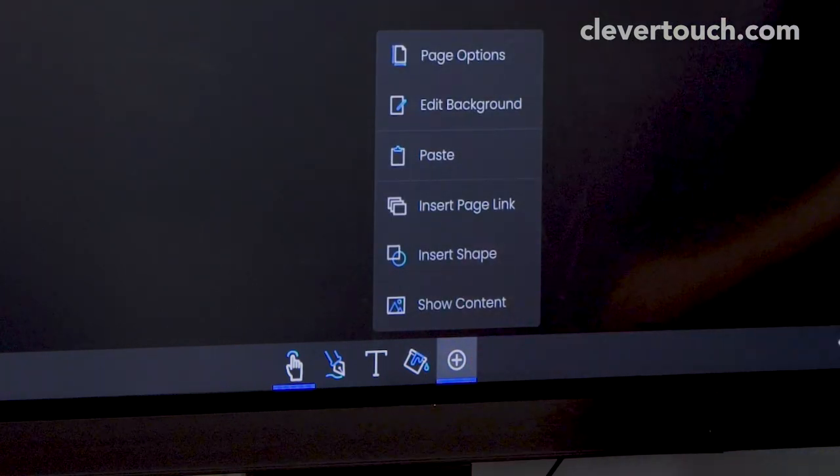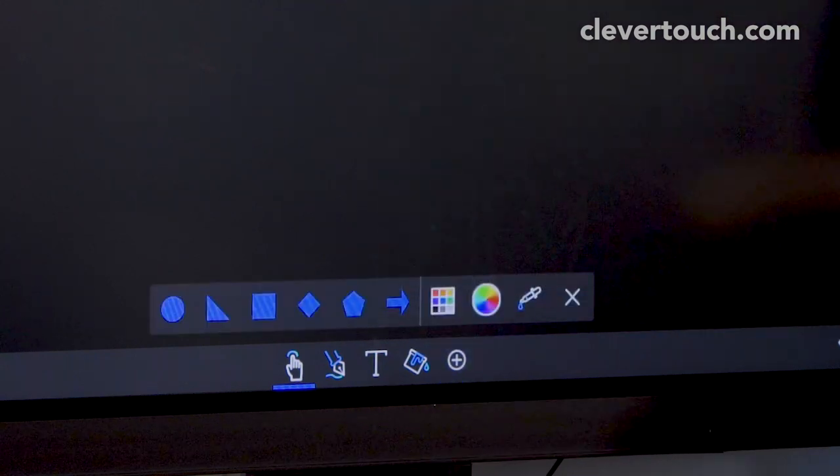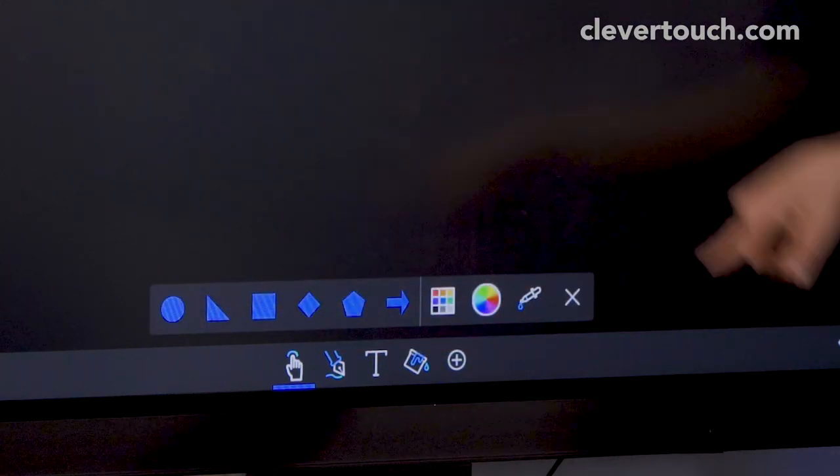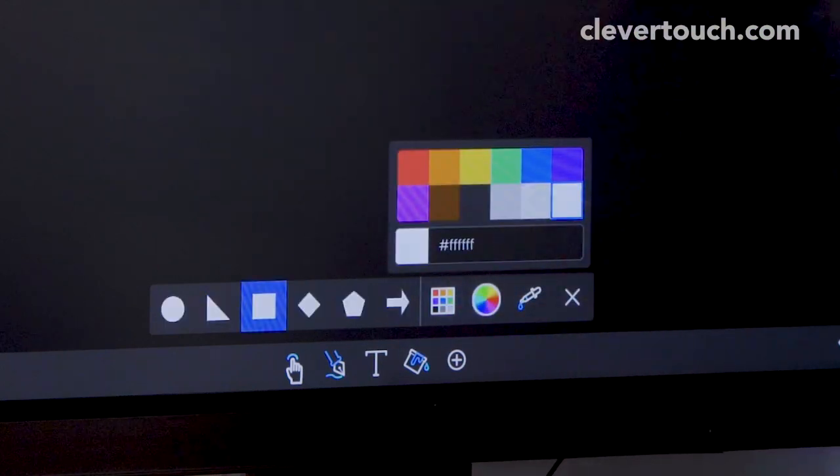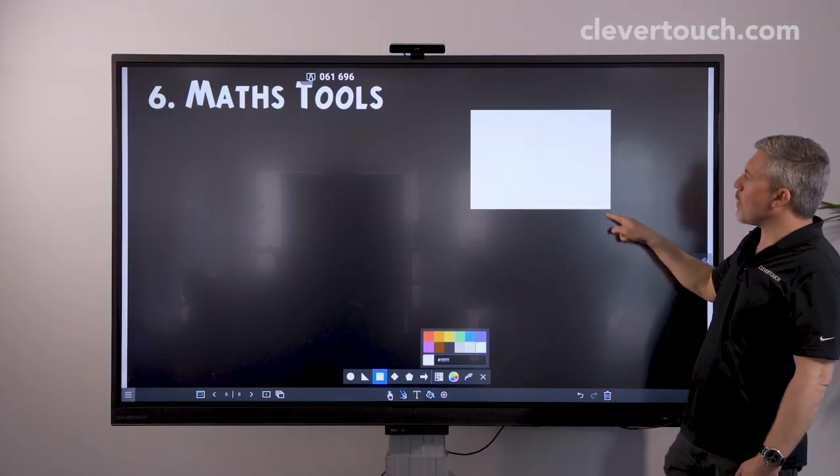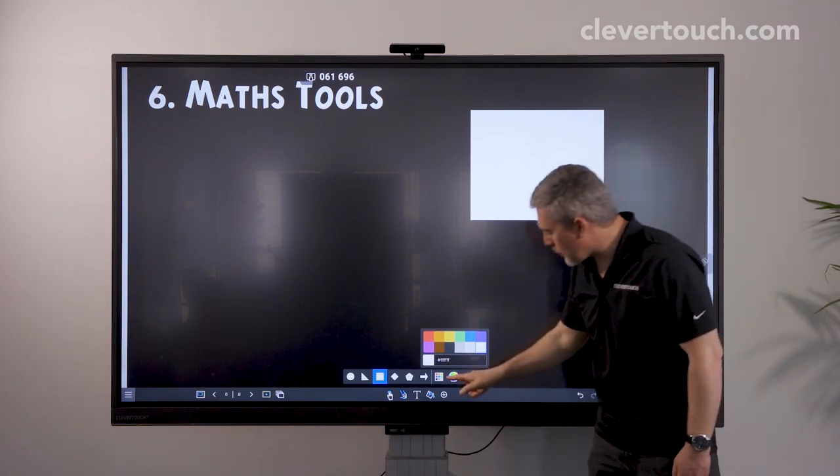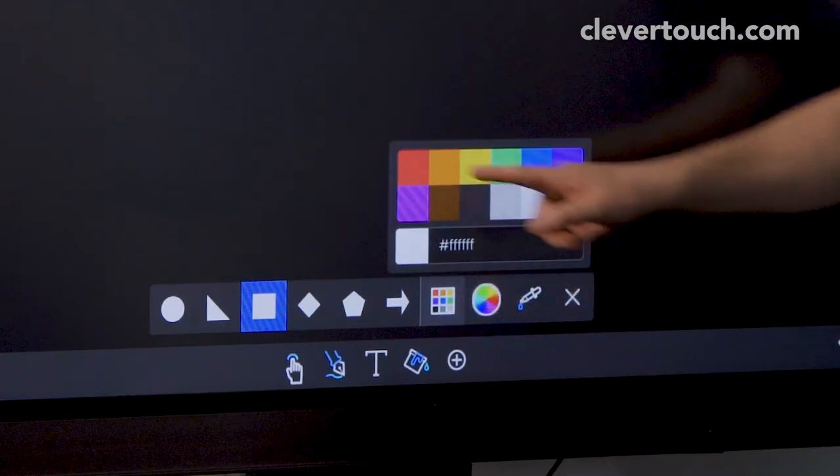In the plus here we have insert shape for example. So there's some go-to shapes that you can drag out very quickly and we can choose a colour and bring that on to our background. So we've got a nice rectangle there. Let me choose a totally different colour.